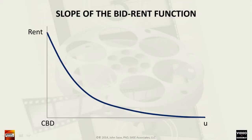Though the bid-rent curve can be modeled alternatively with a quadratic function or topological algebra, we will use the standard negative exponential rent density function introduced by Professor Edwin Mills and other pioneers in this field.